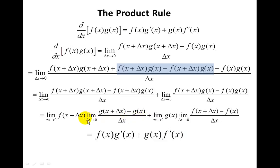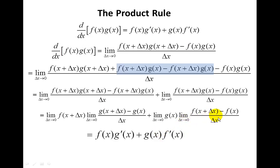Now let's evaluate each limit. The limit as Δx goes to zero of f(x + Δx) is just f(x). The limit of the difference quotient for g(x) is by definition the derivative g'(x). Over in the second part, the limit as Δx goes to zero of g(x) is just g(x), since g(x) has no Δx in it. And the limit of the remaining difference quotient is by definition the derivative f'(x). So we arrive at f(x)g'(x) + g(x)f'(x), which is exactly what we wanted to show.